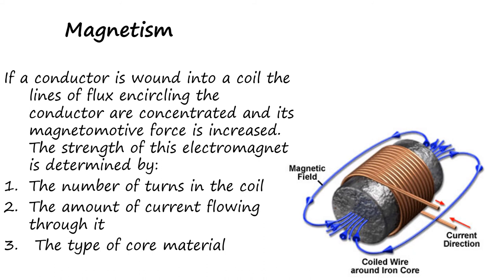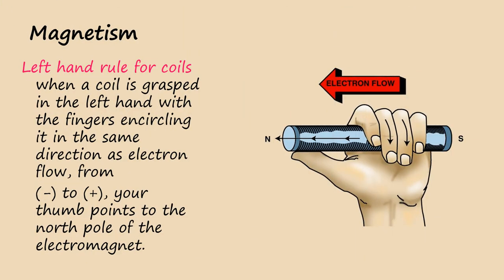The strength of this electromagnet is determined by: one, the number of turns in the coil; two, the amount of current flowing through it; and three, the type of core material. In the left-hand rule for coils, when a coil is grasped in the left hand with the fingers encircling it in the same direction as the electron flow, from negative to positive, your thumb points to the north pole of the electromagnet.